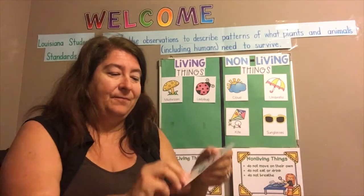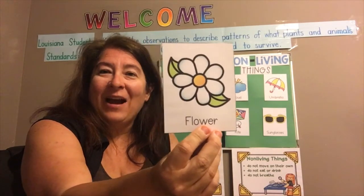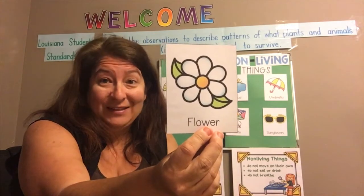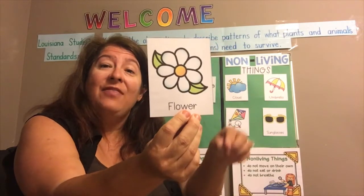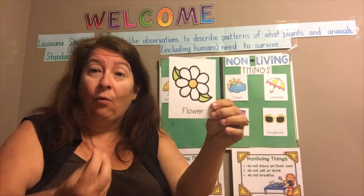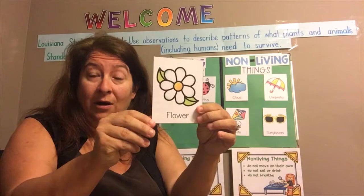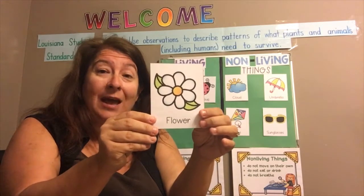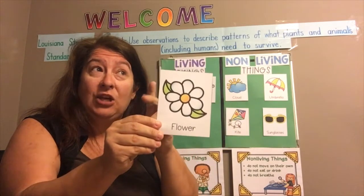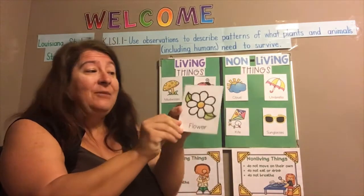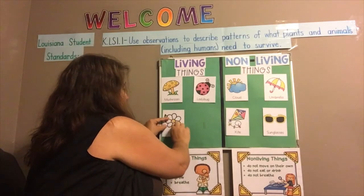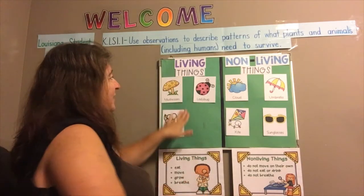Next is a flower. I see flowers outside all the time, and I know that flowers have roots that grow down into the ground. Those roots are how they soak up the water and the nutrients or food that helps them to live, grow, and change. So by those observations — that they grow and change, they need food and water, and they need air — I'm going to say that a flower is a living thing.